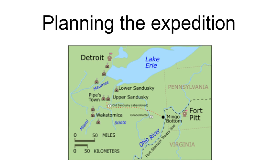In September 1781, General William Irvine was appointed commander of the Western Department of the Continental Army, headquartered at Fort Pitt. Although a major British army under Lord Cornwallis had surrendered at Yorktown in October 1781, virtually ending the war in the East, the conflict on the Western frontier continued. Irvine quickly learned that Americans living on the frontier wanted the army to launch an expedition against Detroit to end ongoing British support for American Indian war parties.